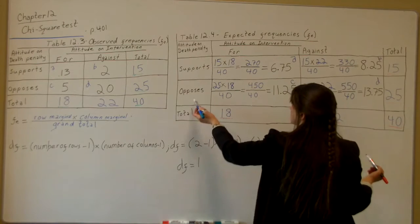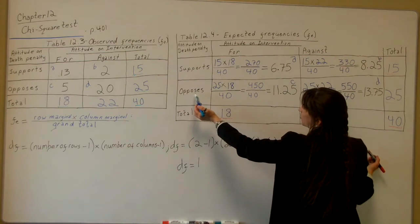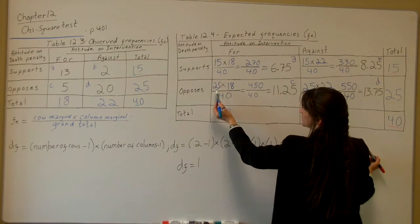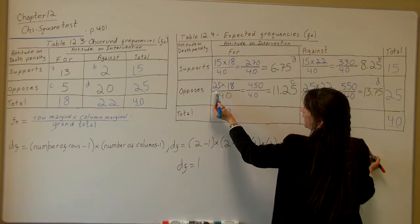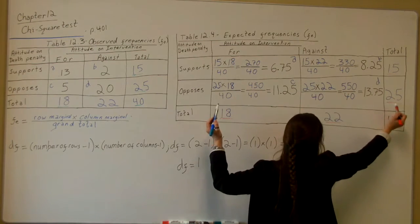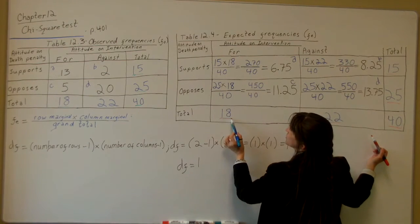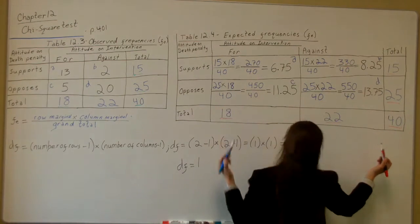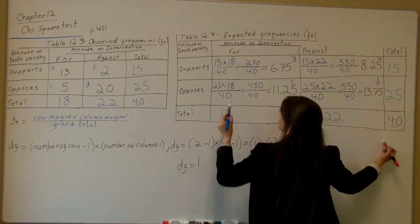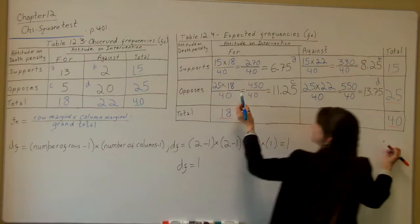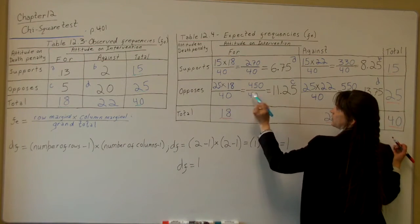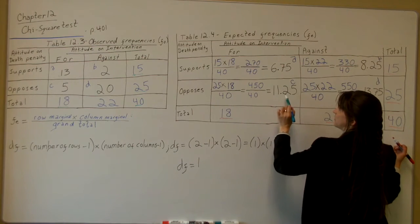Now let's work to the next row, the opposes row. From left to right I like to work when I do this. You have your row marginal, which is 25, times your column marginal, which is 18, over your grand total, which is 40. So 25 times 18 equals 450 divided by 40 equals 11.25.